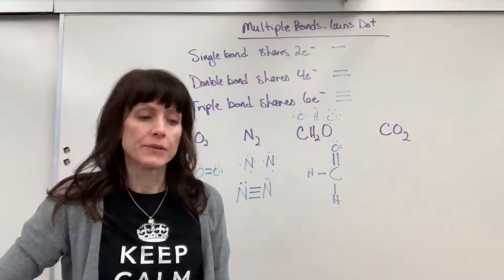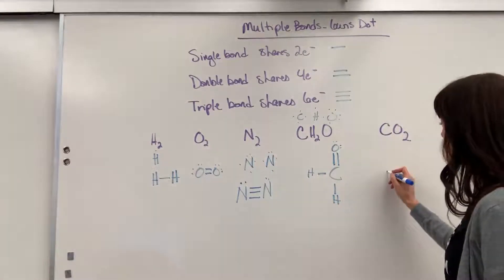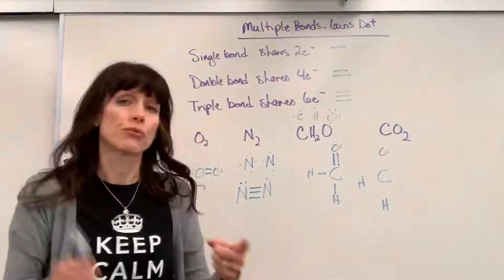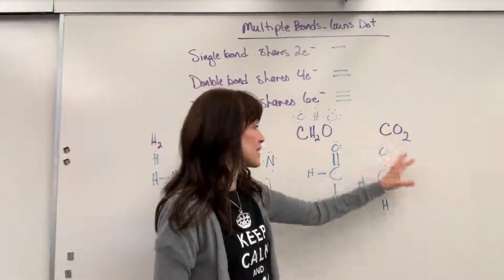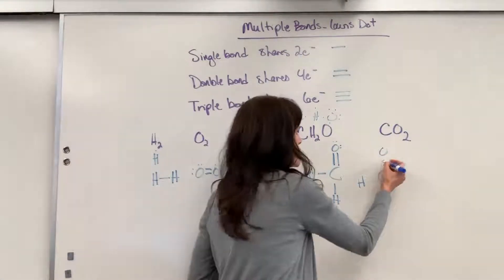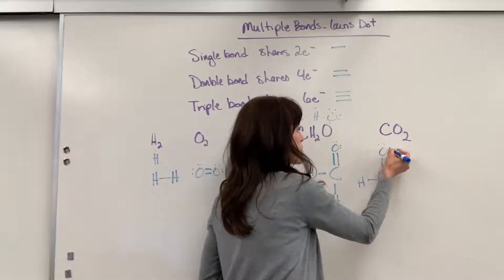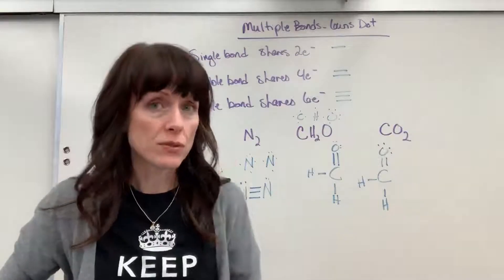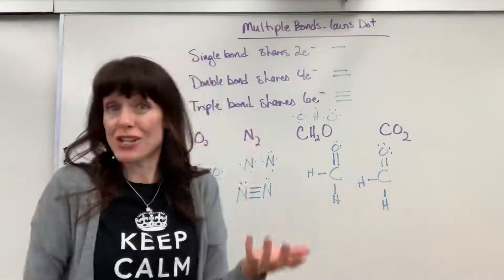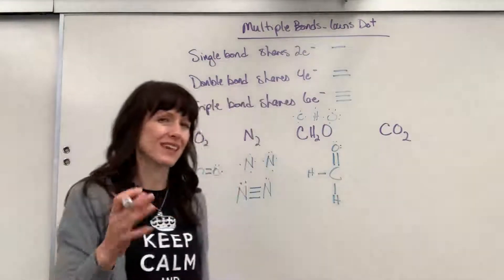A side note: AP exams often give a skeleton structure on their free-response questions — listing the atoms like carbon, oxygen, hydrogen, hydrogen — and expect students to fill in the bonds and lone pairs. You need to include lone pairs and be careful with double bonds. Many teachers and professors won't give you the skeleton; they'll expect you to write the full Lewis dot structure from scratch.